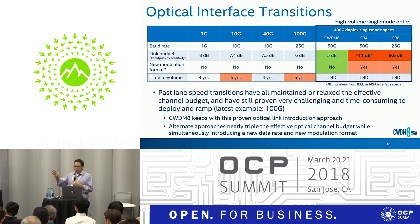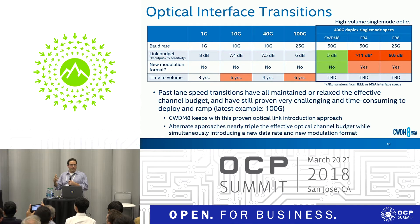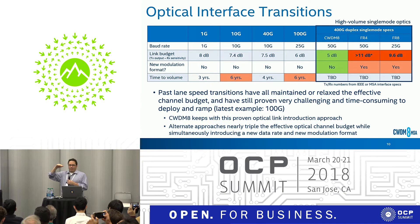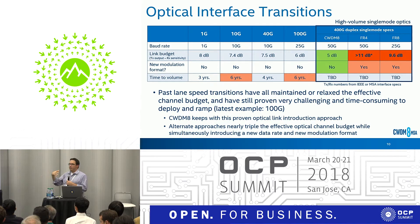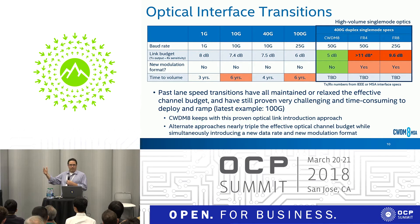Looking at past speed transitions — when the industry has gone for single mode optics from 1 gig to 10 gig to 40 gig to 100 gig — every time the speed has gone up, the link budget has either remained the same or been relaxed somewhat. I'm simplifying link budget here as TX output power minus receive sensitivity. The budget always stays about the same, the modulation format in the past hasn't changed, and still it's taken quite a while to get optics to market. 1 gig took 3 years, 10 gig took 6 years, 40 gig was the same baud rate so it didn't take quite as long, and 100 gig took another 6 years as we went from 10 gig to 25 gig.